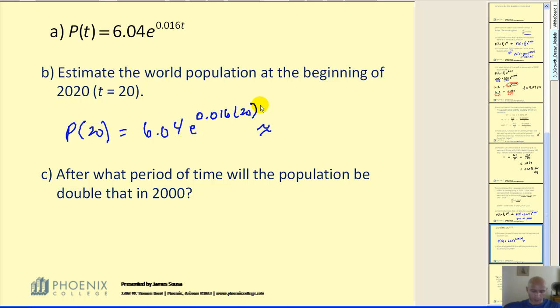To save some time, I've already calculated this value, and it comes out to approximately 8.32 billion people.